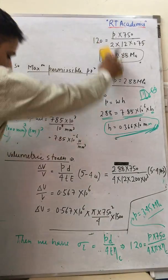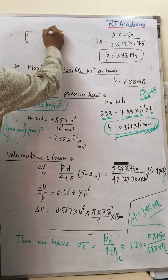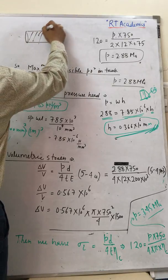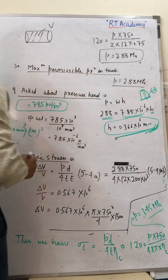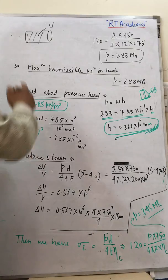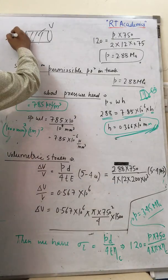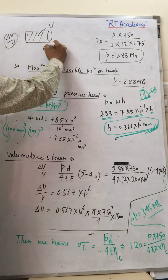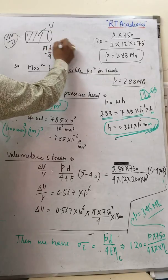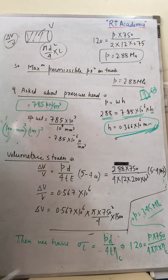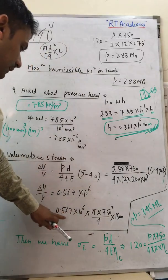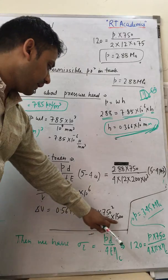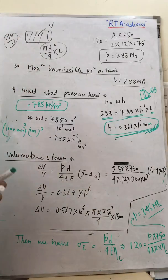To calculate the change in volume, we multiply the volumetric strain by the original volume V. For a cylinder with internal diameter d and length l, the internal volume V equals πd²/4 × l.